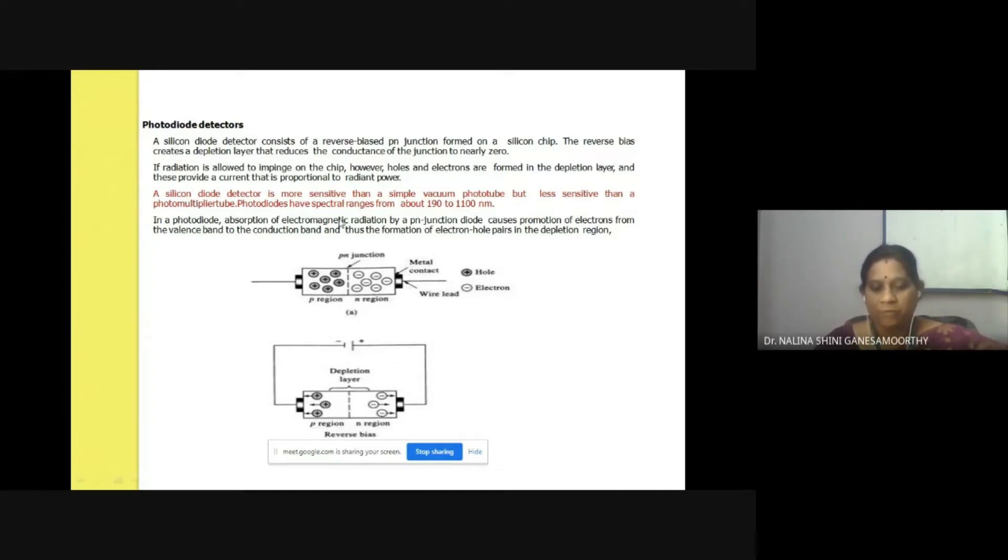These photodiodes have spectral ranges from about 190 to 1100 nanometers. This is one type of photodiode detector which you have studied earlier.